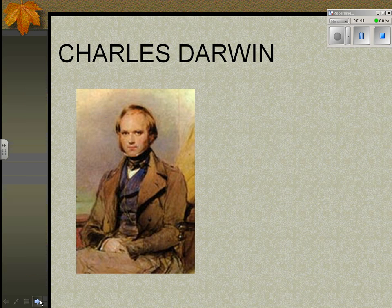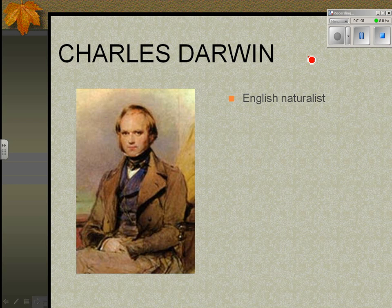His official title — and again, you don't have to write this down, because you won't be asked to regurgitate it on a test — he was an English naturalist. We're talking about the 1800s, which is when Darwin lived. Back then, they didn't have cameras or anything like that.